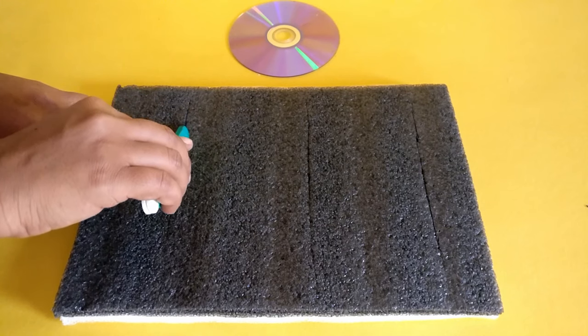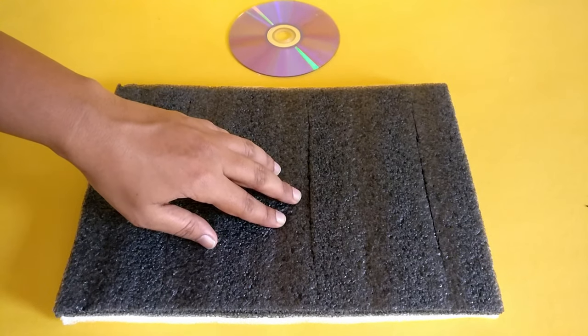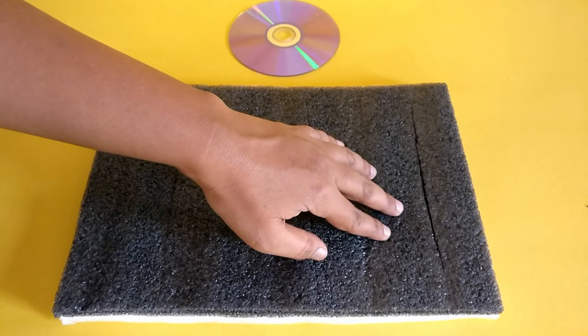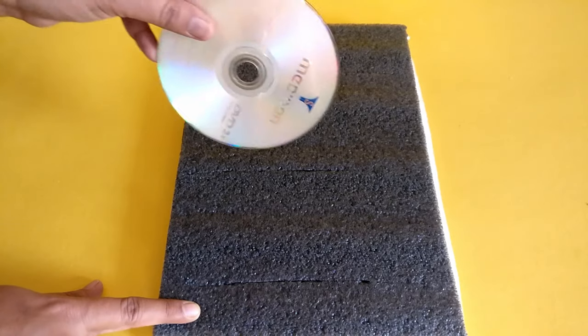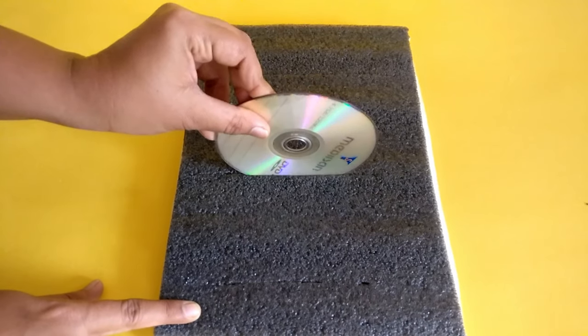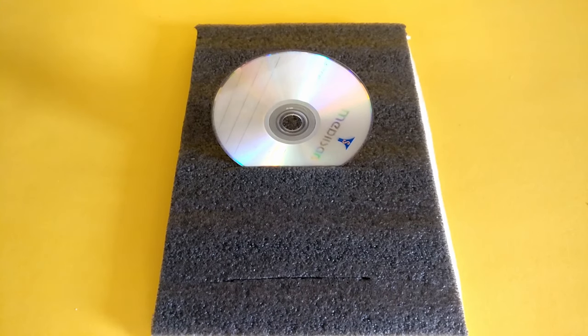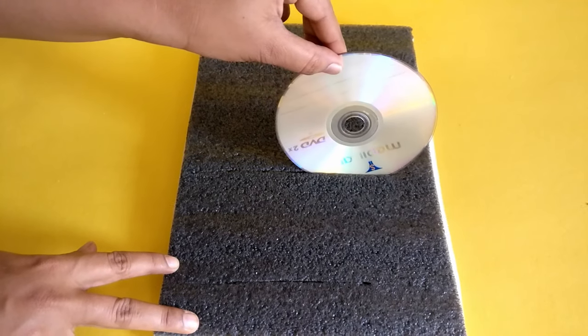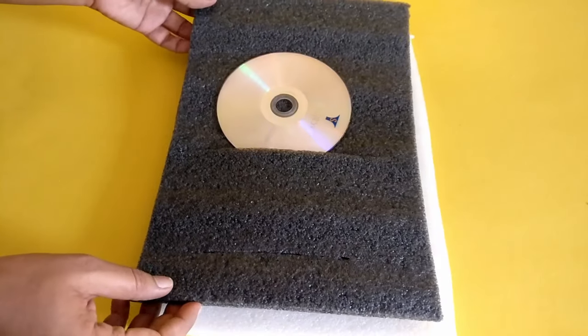Make 3 very narrow slits in the foam sheet using the cutter. Ensure the slits are deep enough for the CDs to sit comfortably in. Make the slits long enough so that the CDs can be rolled up and down the slit. Use 2 foam sheets if required.